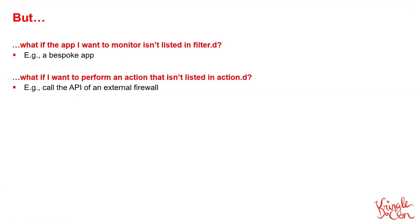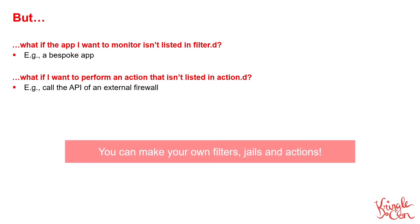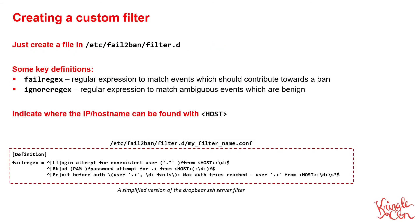But what happens if the application you want to monitor isn't already listed in the filter.d folder? Or what if you want to perform some kind of action that isn't already in action.d? Well, the great thing is you can create your own filters, jails, and actions for your custom applications. Let's start with creating a custom filter — it's as simple as creating a file in the filter.d folder that follows a certain format. The key definition is that of fail regex, and this is the regular expression to match lines in a log file that relate to malicious activity. The example on screen here is a simplified version of the configuration for the DropBear SSH server.